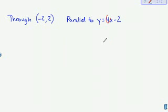I want to go through the point negative 2, 2, parallel to the equation y equals 4x minus 2.